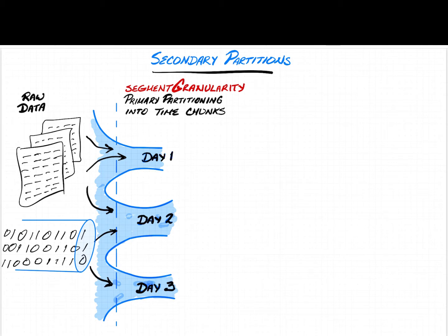When you're partitioning on day and you have a large amount of data within a day, there are multiple reasons you'll want to sub-partition. Based on testing, Apache Druid's efficiency gives us a rule of thumb to use five million rows as the target size for segment files. So if you have a lot more than five million rows within a day, you'll want to use secondary partitioning.